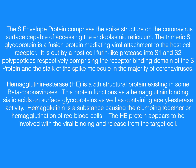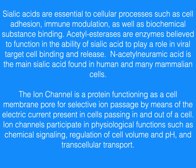Hemagglutinin esterase is a fifth structural protein existing in some beta coronaviruses. This protein functions as a hemagglutinin binding sialic acids on surface glycoproteins, as well as containing acetyl esterase activity. Hemagglutinin is a substance causing the clumping together, or hemagglutination, of red blood cells. The HE protein appears to be involved with viral binding and release from the target cell. Sialic acids are essential to cellular processes such as cell adhesion, immune modulation, and biochemical substance binding. Acetyl esterases are enzymes believed to function in the ability of sialic acid to play a role in viral target cell binding and release.